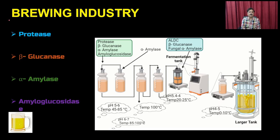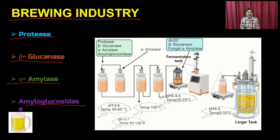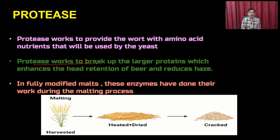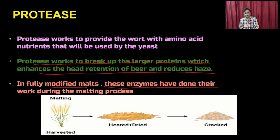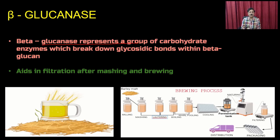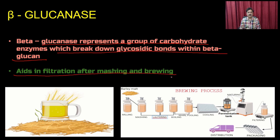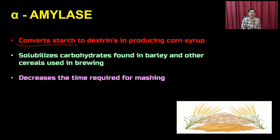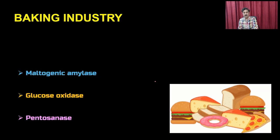In the brewing industry, proteases break down large proteins, enhancing head retention of beer and reducing haze. In fully modified malt, these enzymes work during the malting process. Beta-glucanase breaks down glycosidic bonds within beta-glucan, aiding filtration after mashing and brewing. Alpha-amylase converts starch to dextrin in producing corn syrup, solubilizes carbohydrates found in barley and other grains used in brewing, and decreases the time required for mashing.